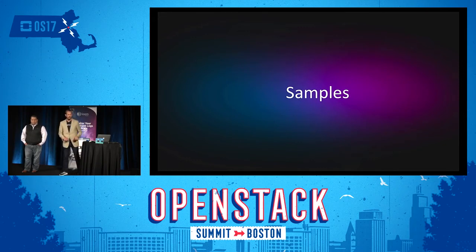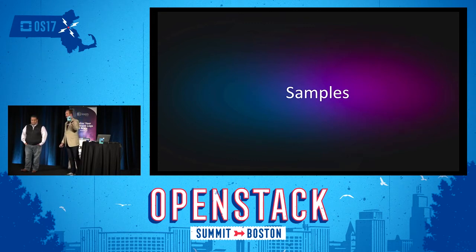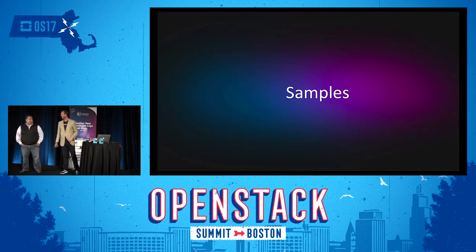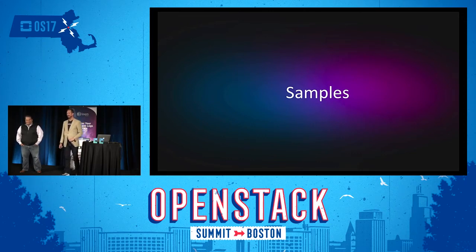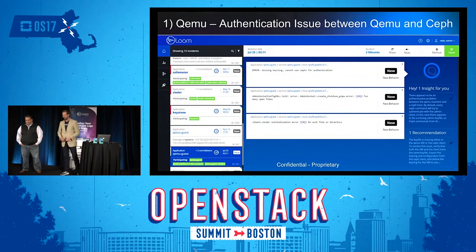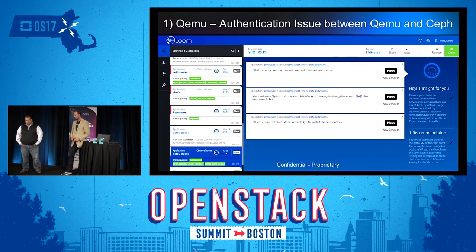We're going to raffle off an Amazon Echo — it's AI in a box. It's not as amazing as Loom, but we're going to give away a free one at the end. You could probably hook up your Loom to the AI in a box and have it tell you, in whatever voice you want, 'you have a problem.' Let's go through a couple of examples. Here's one with a Keystone authentication issue. What do you see based on what Loom is showing you here, and what are your conclusions?